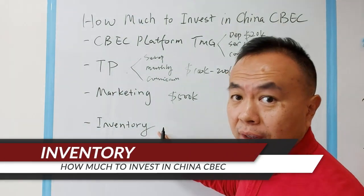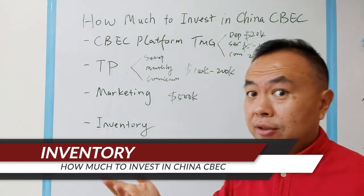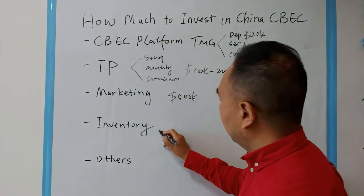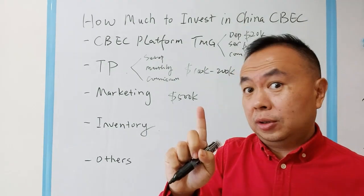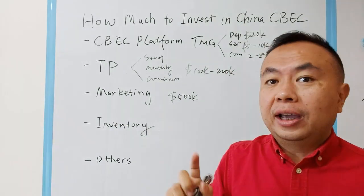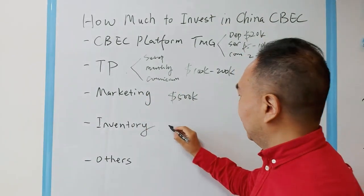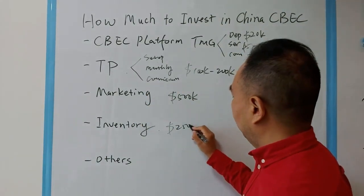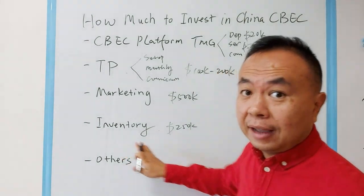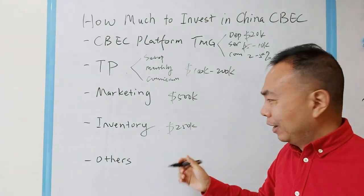The next element is inventory. You spend on your product and your sales target. Let's assume for the first year your sales target is $1 million USD and your inventory recycle speed is 4 times. That means you need to put in $250,000 of inventory. This is already a very low number.